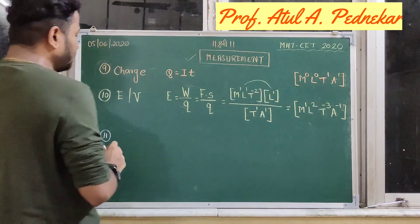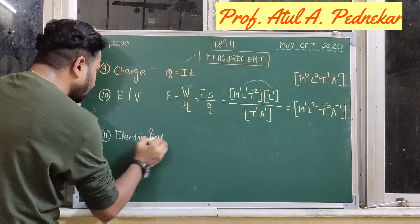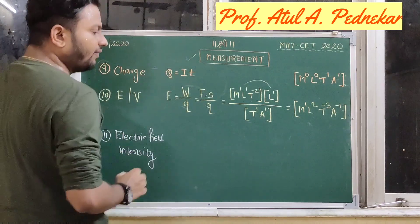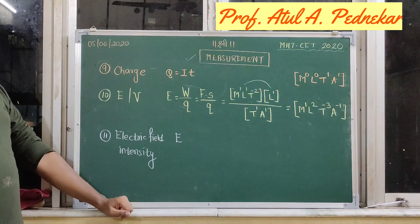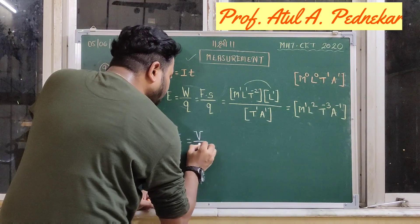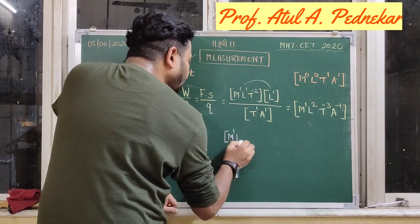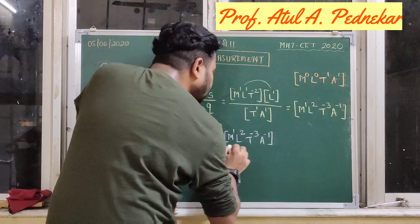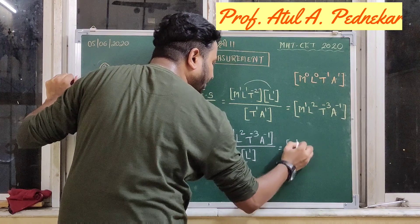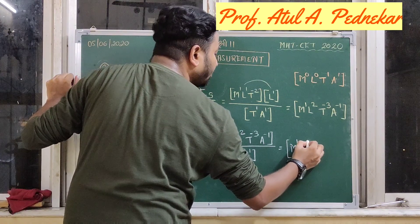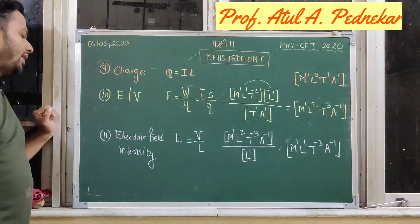The next quantity is electric field intensity, also denoted by E. Don't get confused — both EMF and electric field intensity are denoted by E. Electric field intensity is measured as potential difference per unit length. We know the dimensions of potential difference are M1, L2, T raised to minus 3, A raised to minus 1. Dividing by length (L1), the dimensions of electric field intensity are M1, L1, T minus 3, and A minus 1.